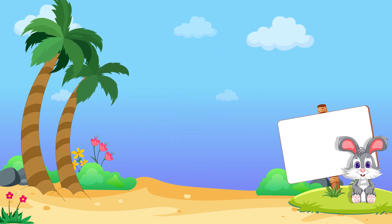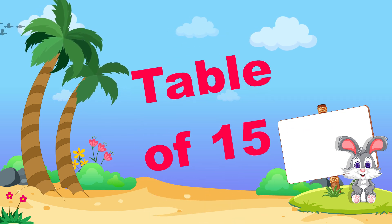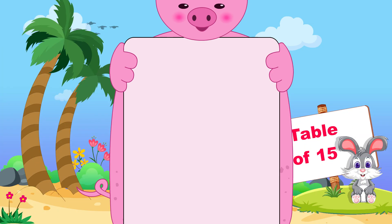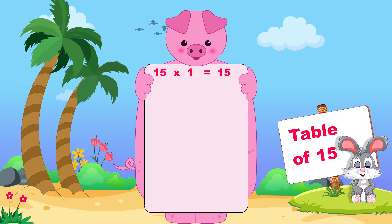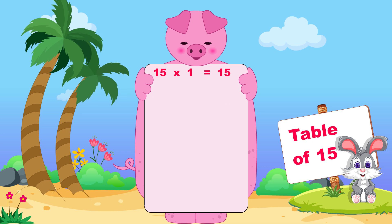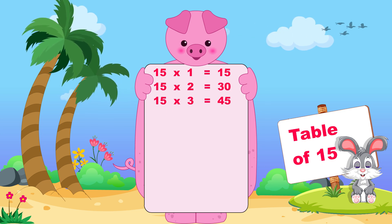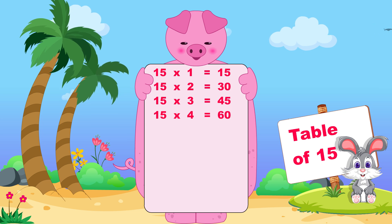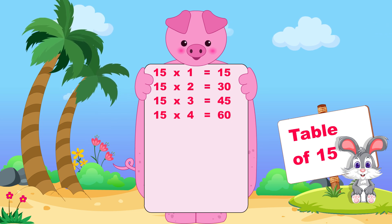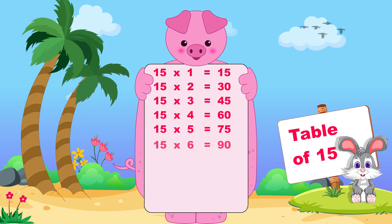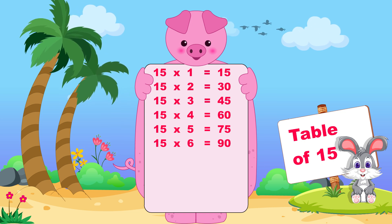Let's learn now table of fifteen. Fifteen ones are fifteen, fifteen twos are thirty, fifteen threes are forty-five, fifteen fours are sixty, fifteen fives are seventy-five, fifteen sixes are ninety.